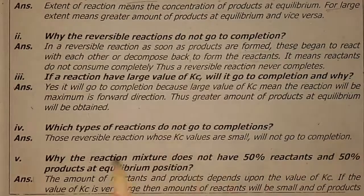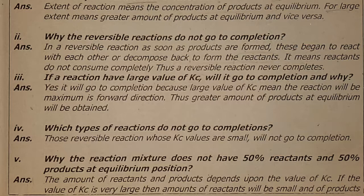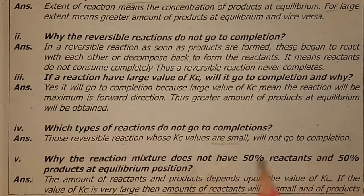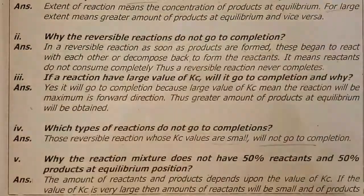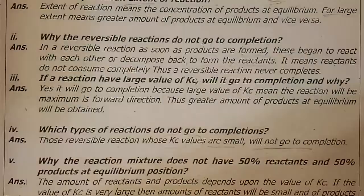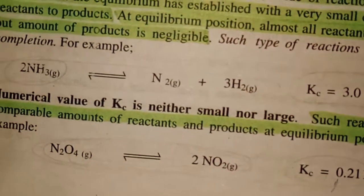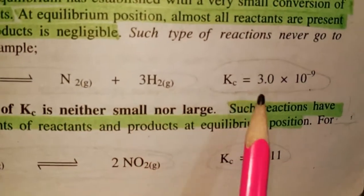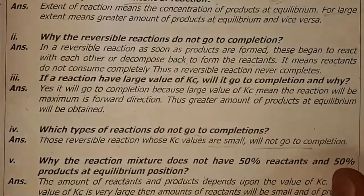Students, move to question number 4: which types of reactions do not go to completion? Those reversible reactions whose Kc values are small will never go to completion. Kc value is small — reaction does not complete. This is the reaction which decomposes — Kc value is small. Let's move towards the fifth question of this test yourself.